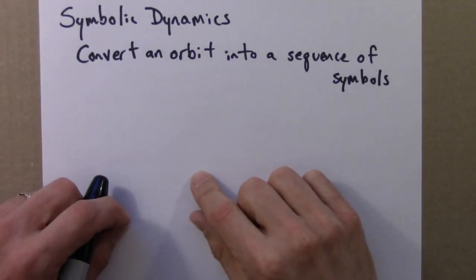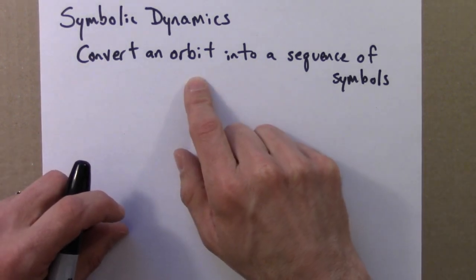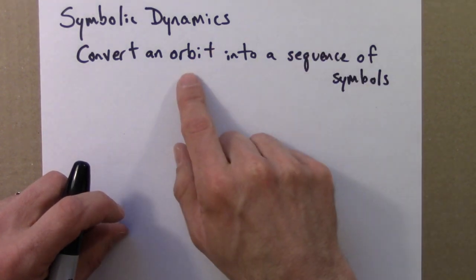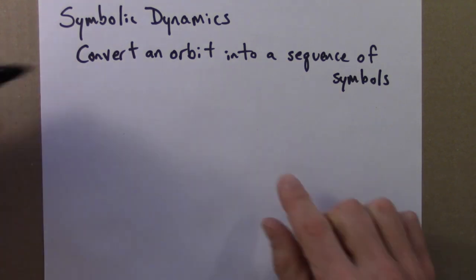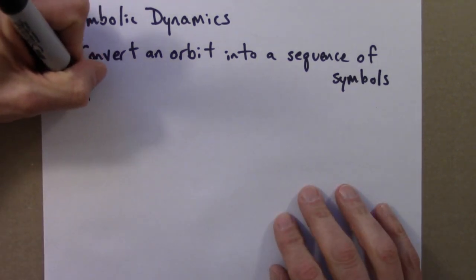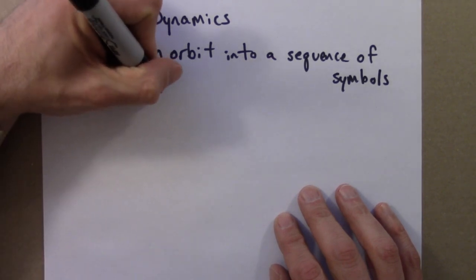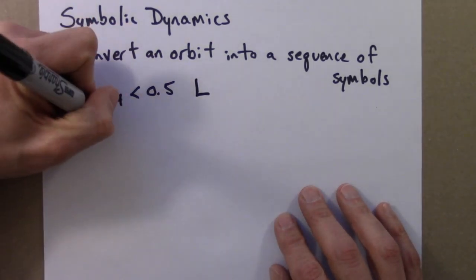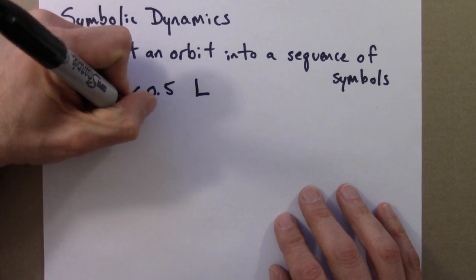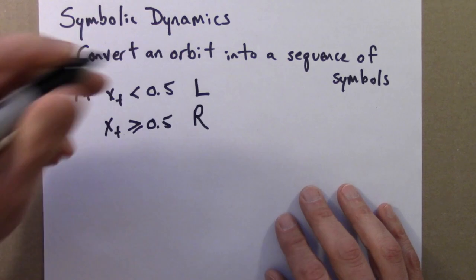I'll start by introducing a technique known as symbolic dynamics. The idea behind symbolic dynamics is to convert an orbit, a series of numbers, in this case between 0 and 1, into a sequence of symbols. The standard way to do this is as follows: if our iterate x is less than 0.5, I'll call that L. And if x is greater than or maybe equal to 0.5, I'll call that R.